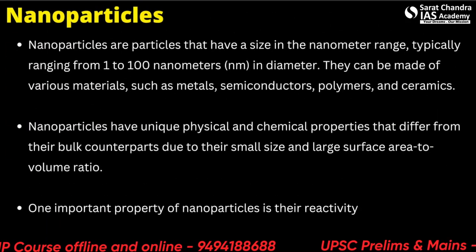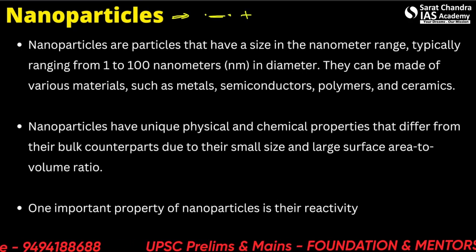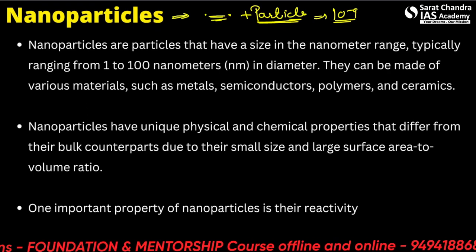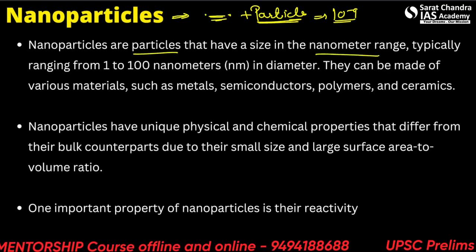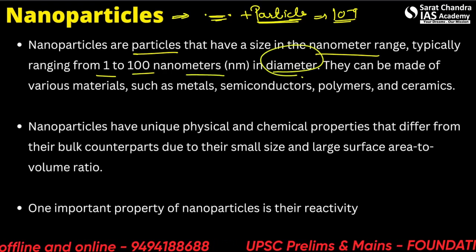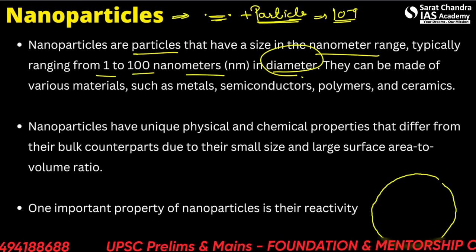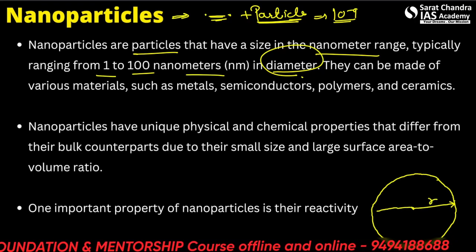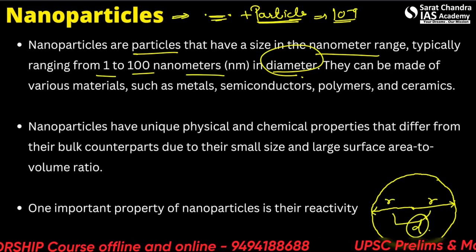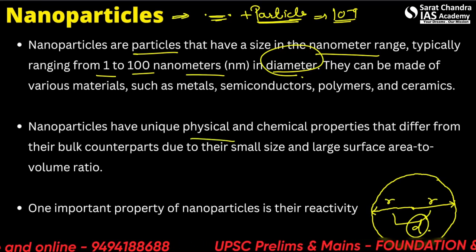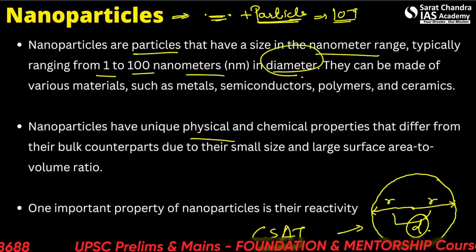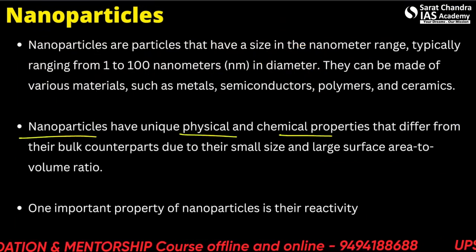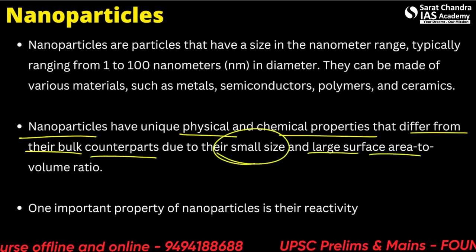The next topic is nanoparticles. Nano means their size is in the order of 10⁻⁹ meters. Nanoparticles are particles with a size in the nanometer range, typically 1 to 100 nanometers in diameter — diameter being twice the radius of the particle. Nanoparticles have unique physical and chemical properties that differ from their bulk counterparts due to their small size and large surface area to volume ratio.